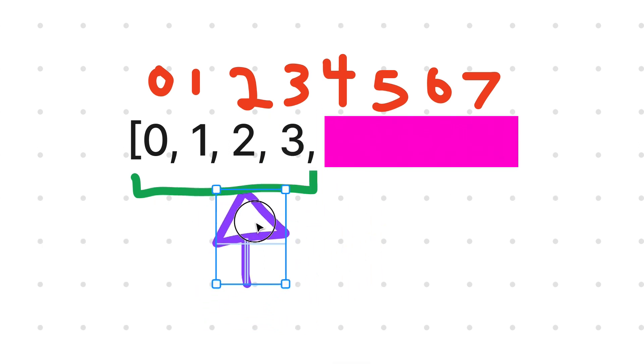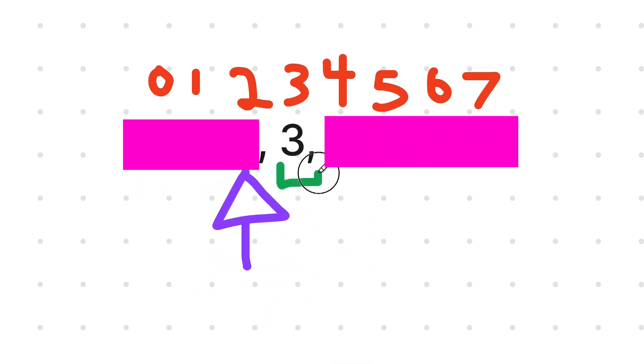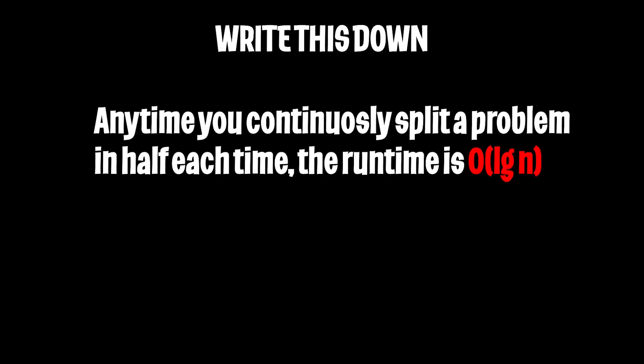And each time we move left or right, we're simply just splitting our problem in half. The runtime of this algorithm is Big O of log N. One easy way to remember this is that whenever you split a program in half each time, it basically runs in Big O of log N.